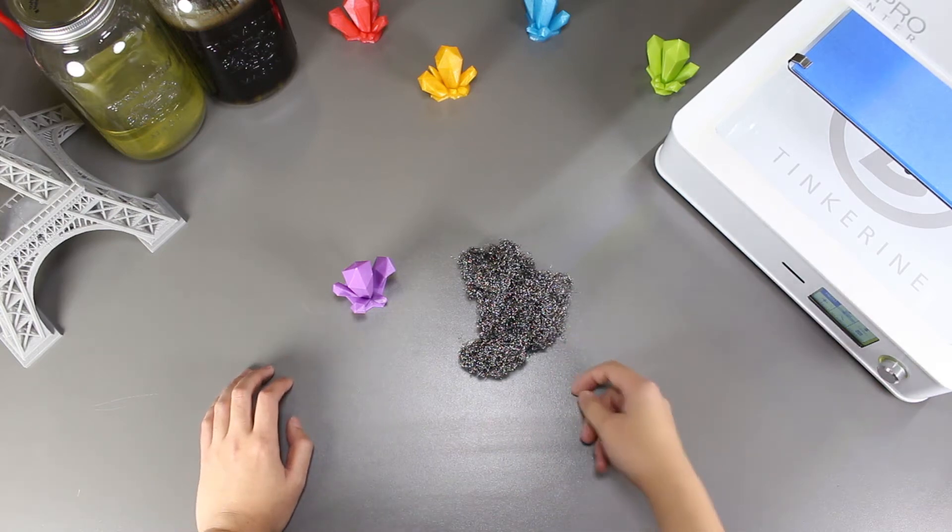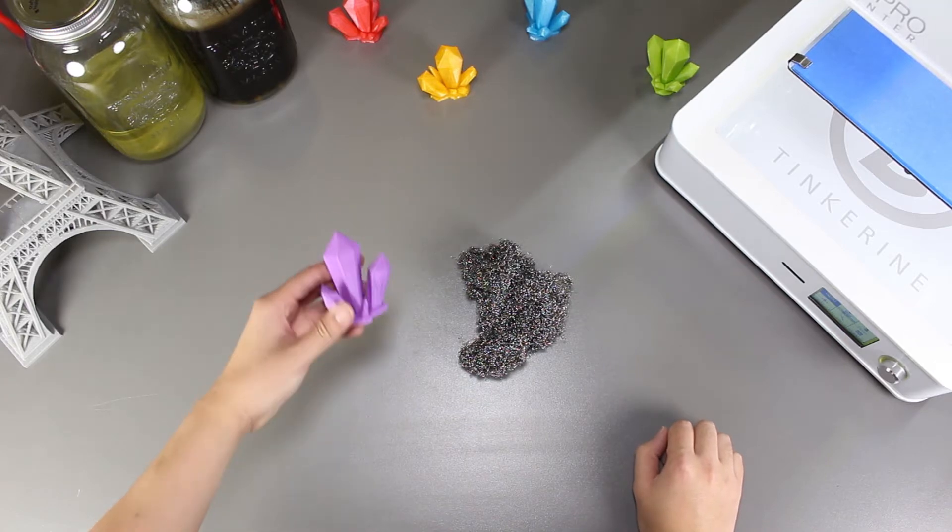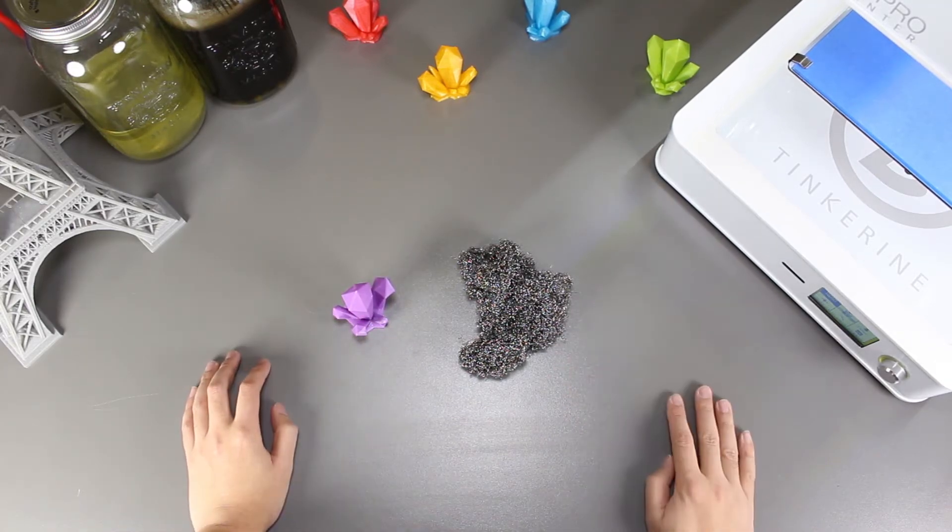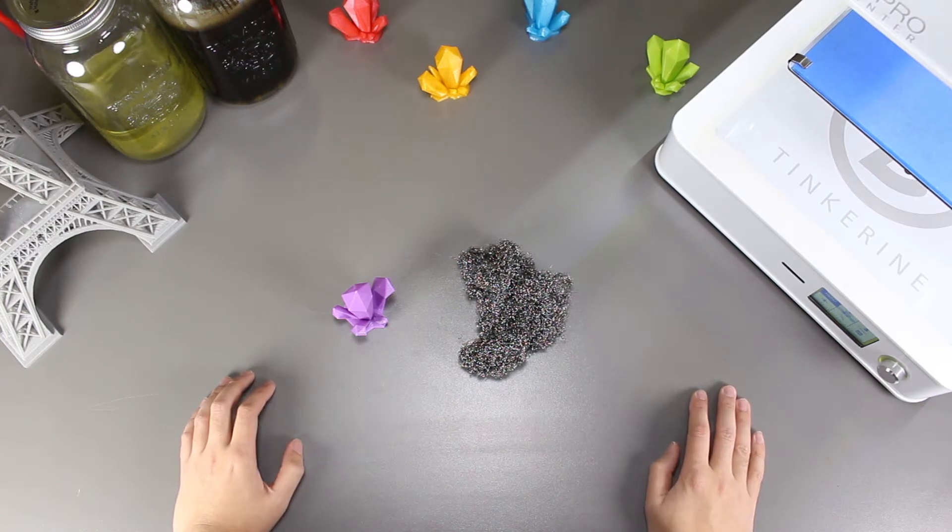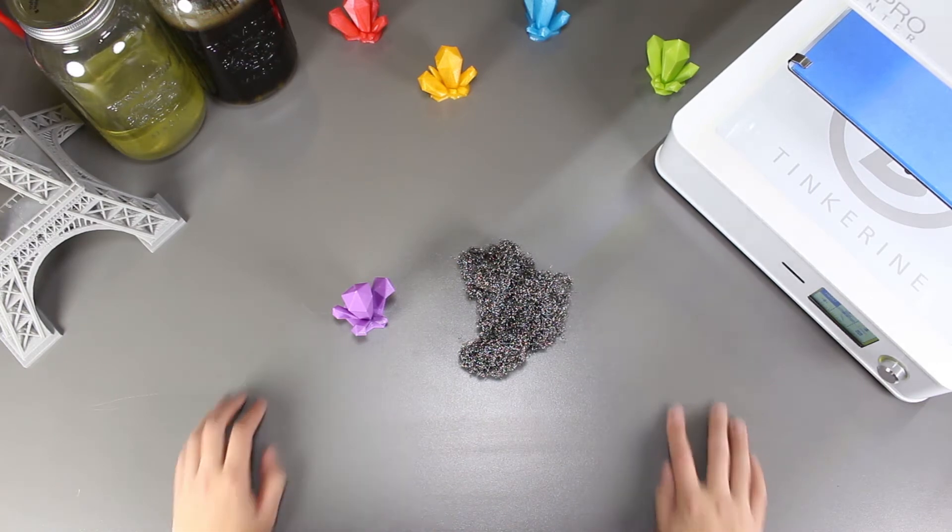Welcome to another episode of Tinkerine Experiments. Today we are going to be using steel wool to smooth out this PLA model. It was suggested by one of our viewers, Nino Tartag Neon, so we got some and we'll find out whether or not it works today.